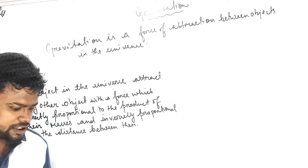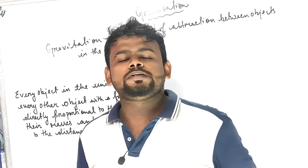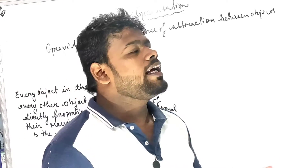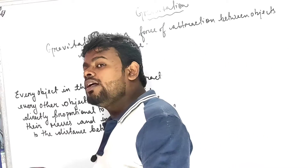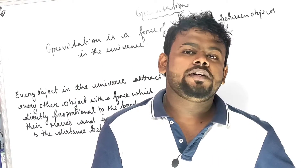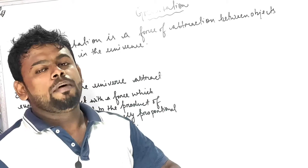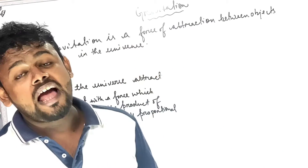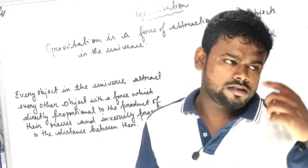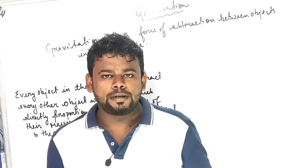Many students have misconceptions about gravitation — that gravitation is only present in the Earth, or only in the Sun, or only in the Moon. Let me clarify: gravitation is present everywhere. Without gravitation, I don't think anything can exist. Starting from Neptune, ending with Saturn — Jupiter, Mars, Earth, Sun, Moon, comets, asteroids — gravitation is present everywhere.